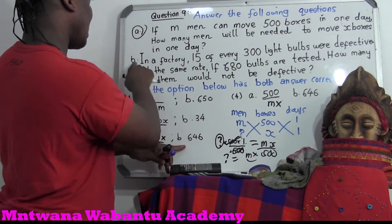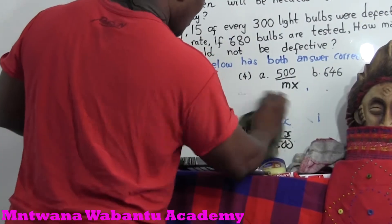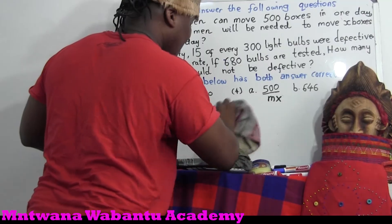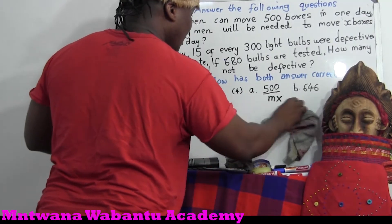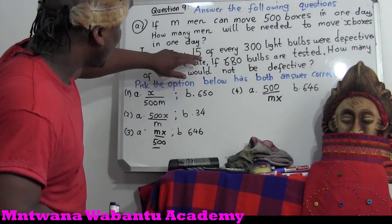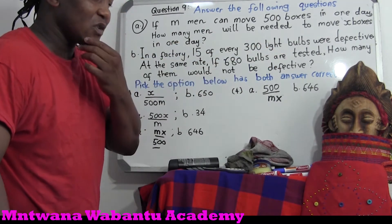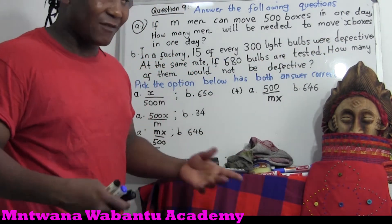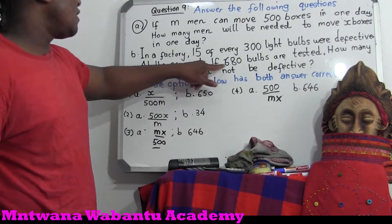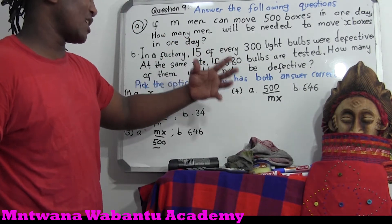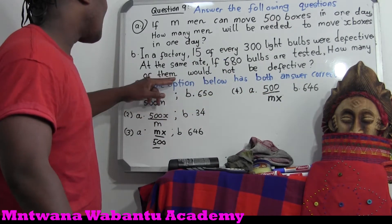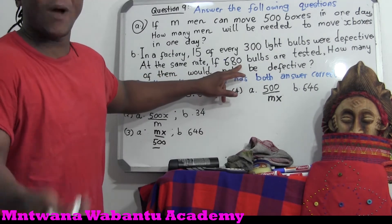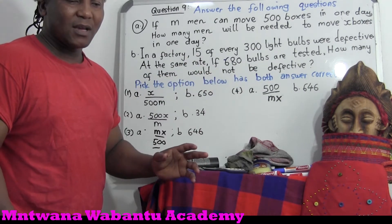We still have to do the second part, which is B. So let's go for the second part. But you have to read the question. In a factory, 15 of every 300 light bulbs — so every 15 out of 300 bulbs were defective, means they were not working. At the same rate, if 680 bulbs — so now they increase, like we want to test more bulbs — how many of them would not be defective? So we want to test 680 and see how many of them are going to be working, meaning the effective ones.